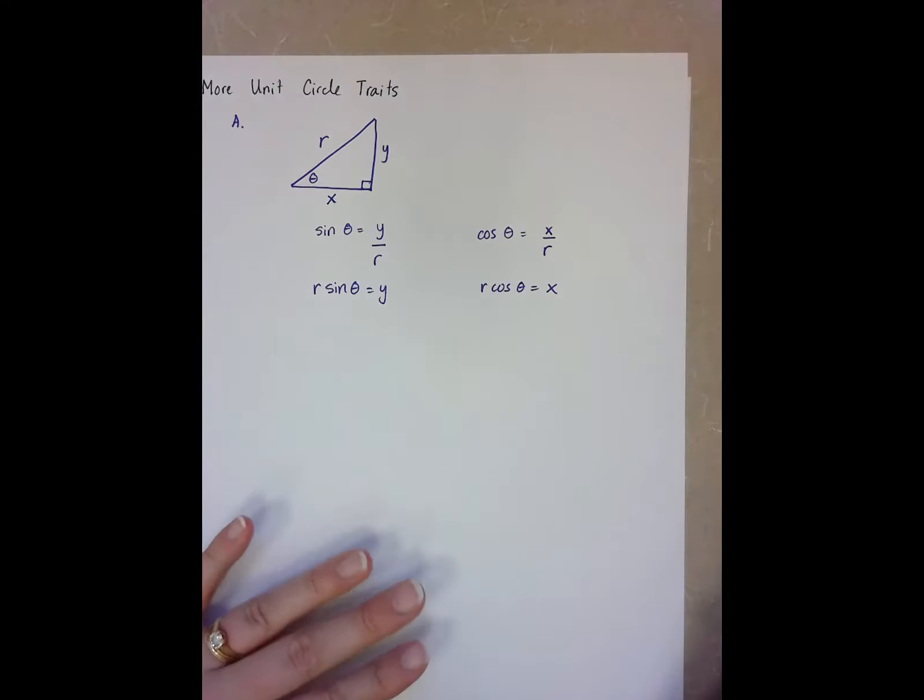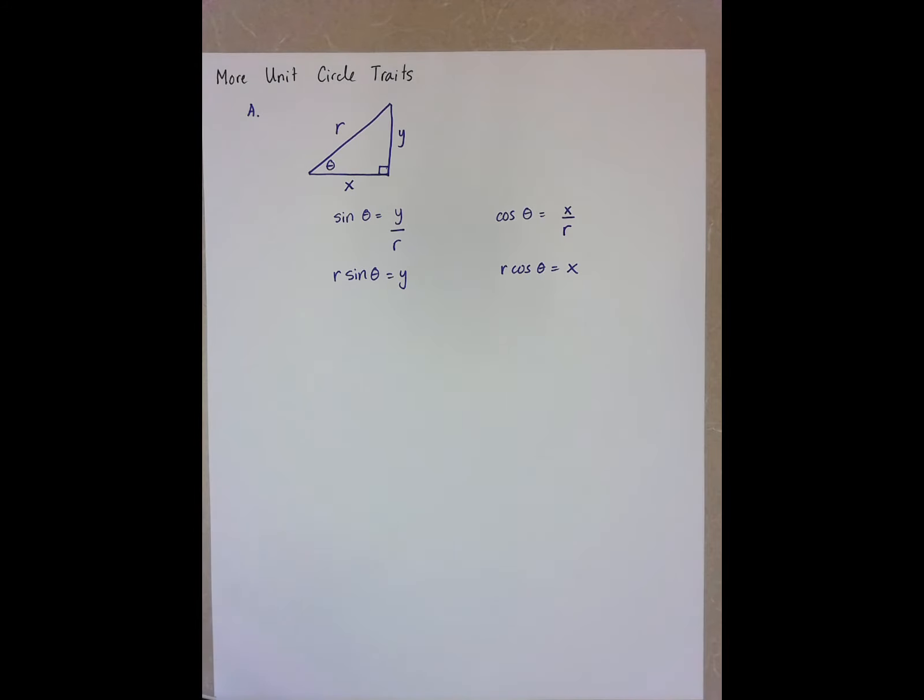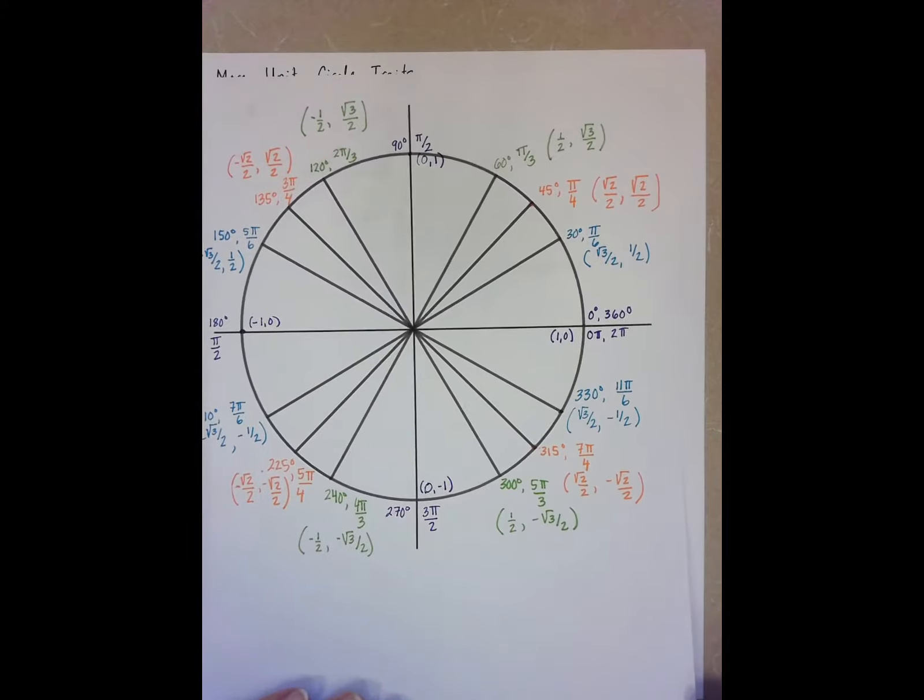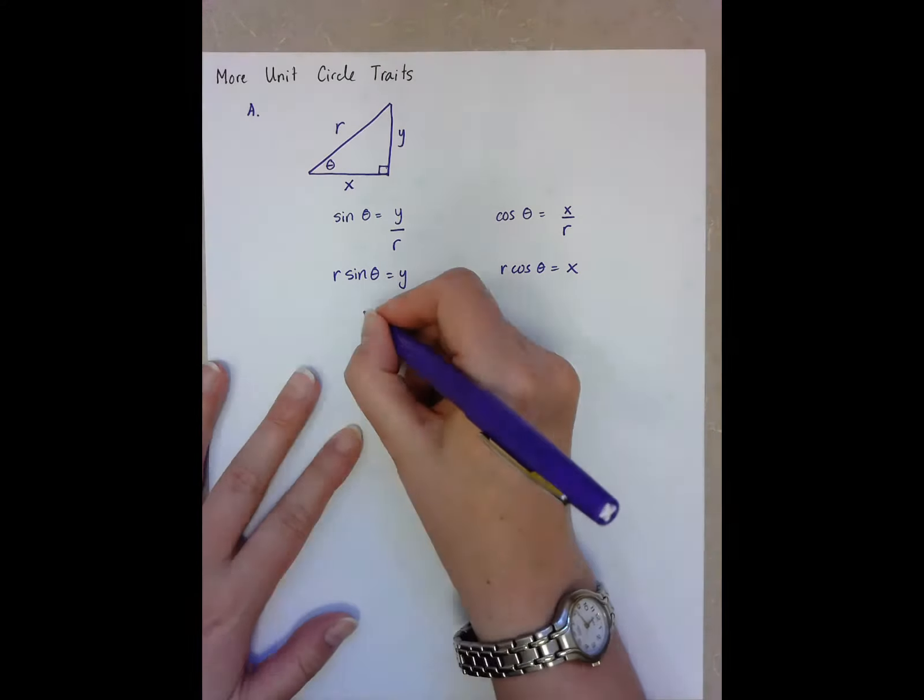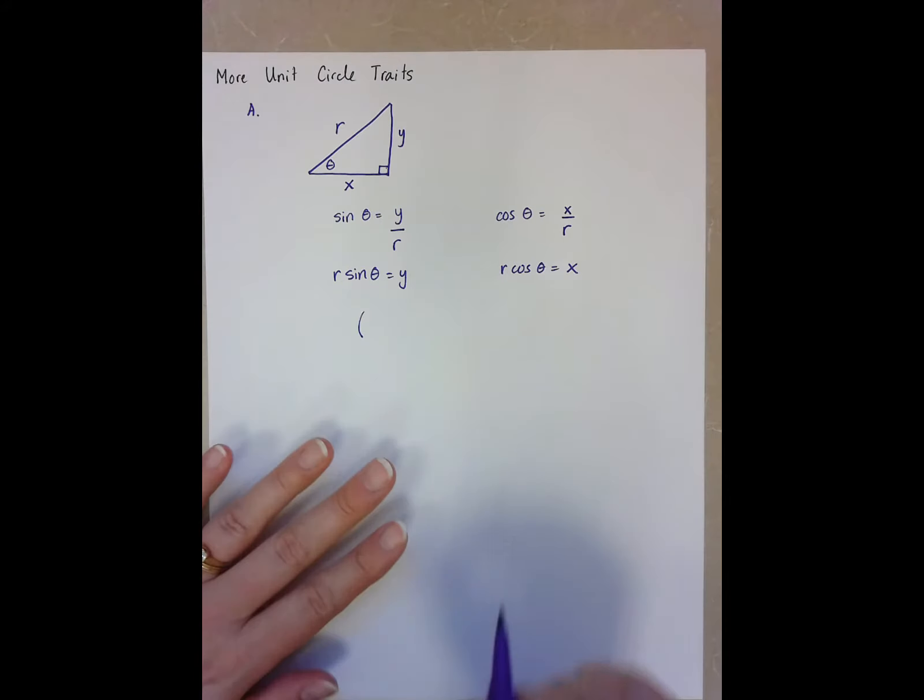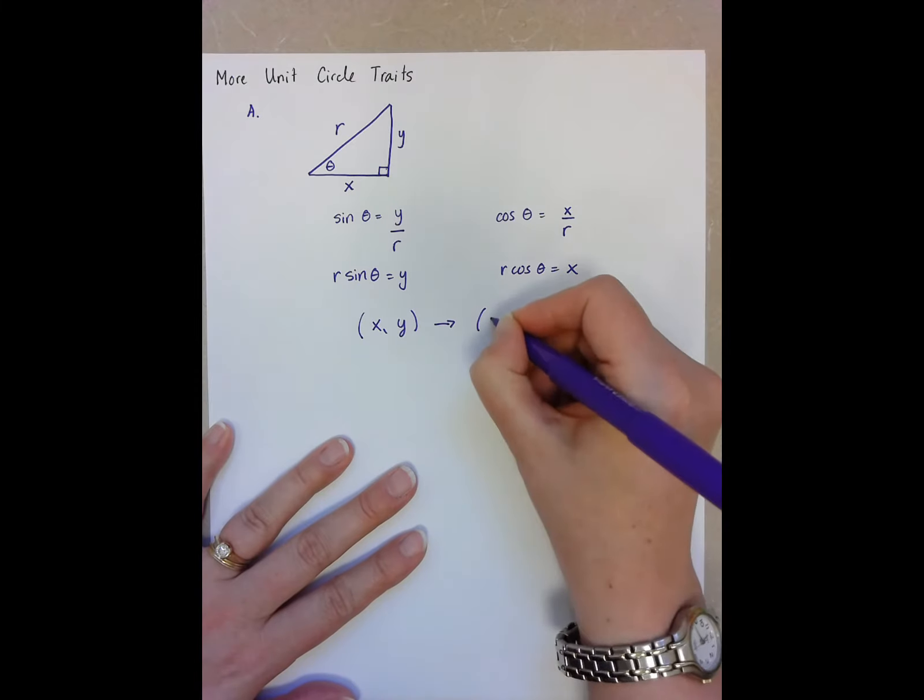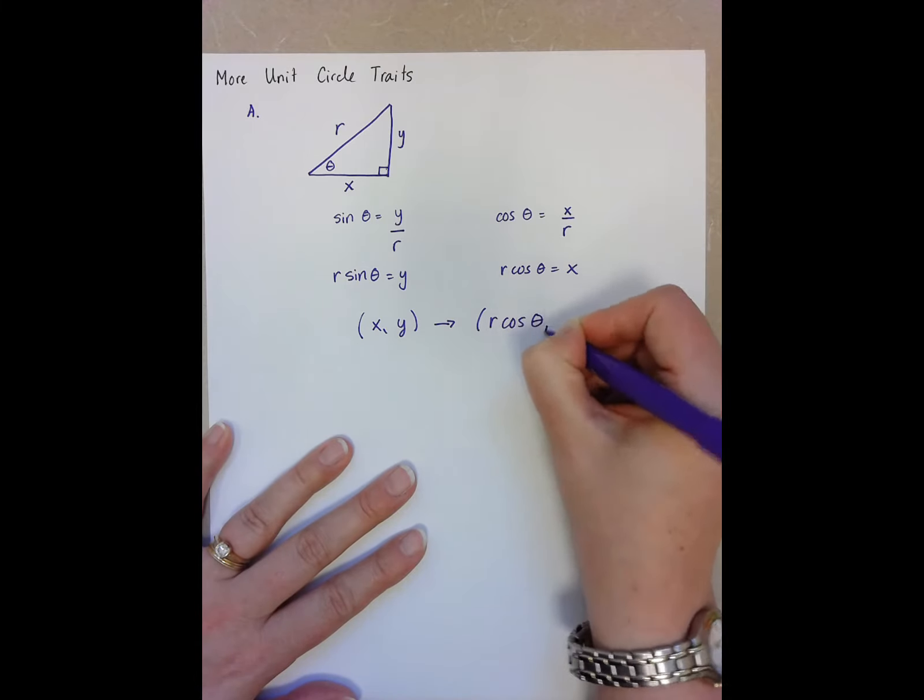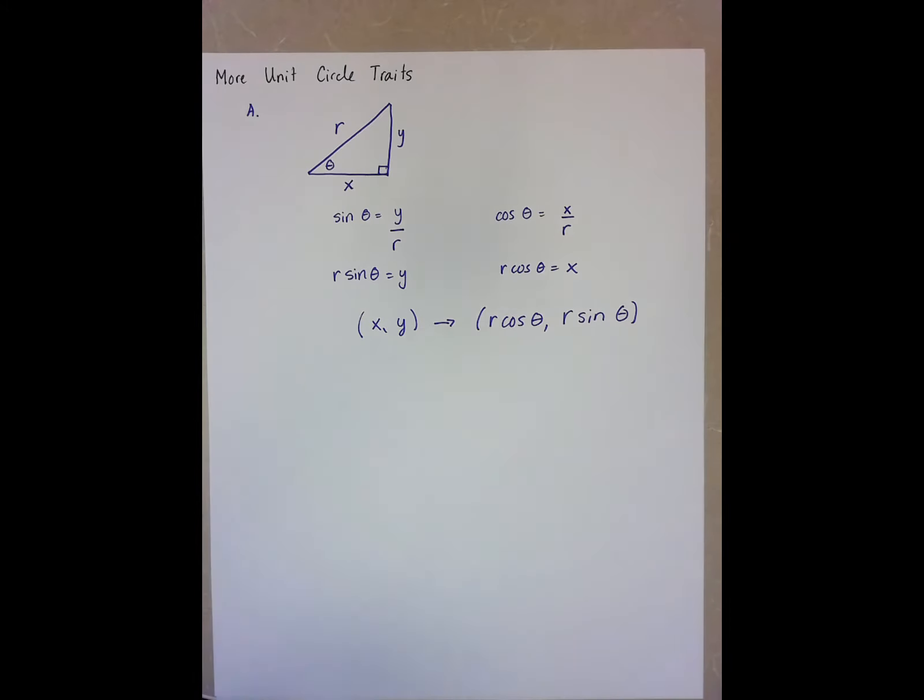Which means if I'm trying to find a point on the unit circle, any point, not just our special ones, but any point on any circle, the point is going to be x comma y, which is r cosine theta comma r sine theta.